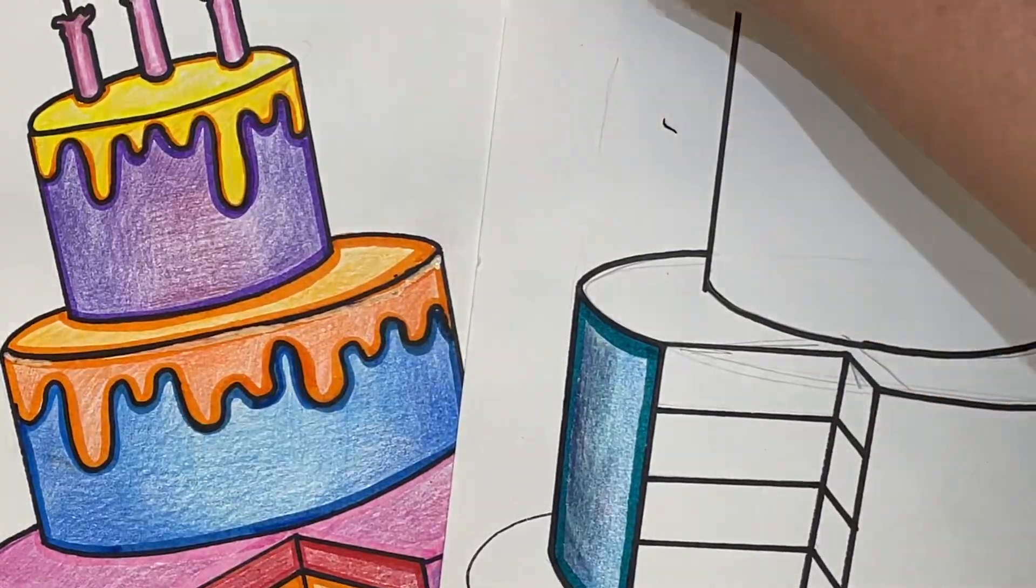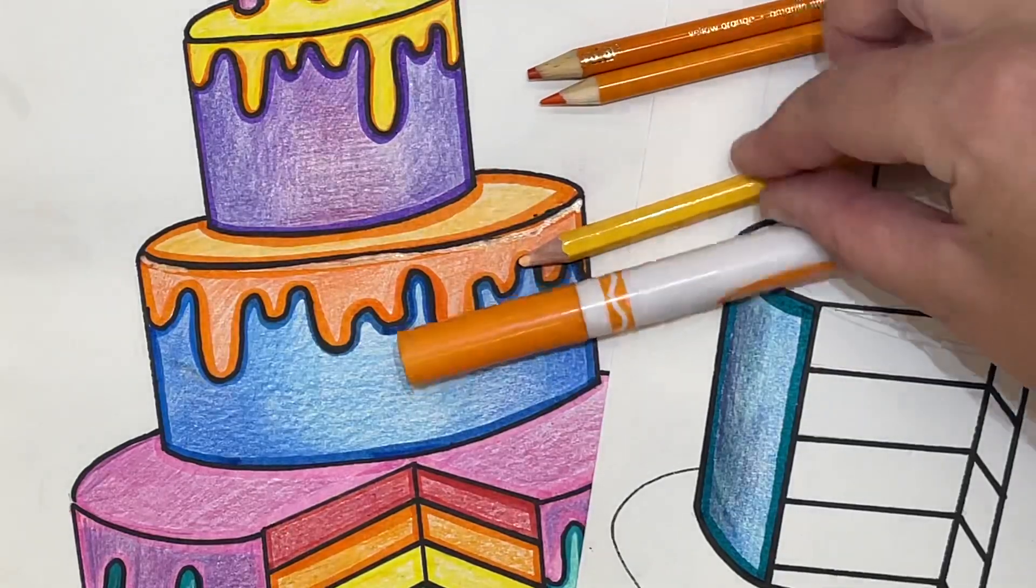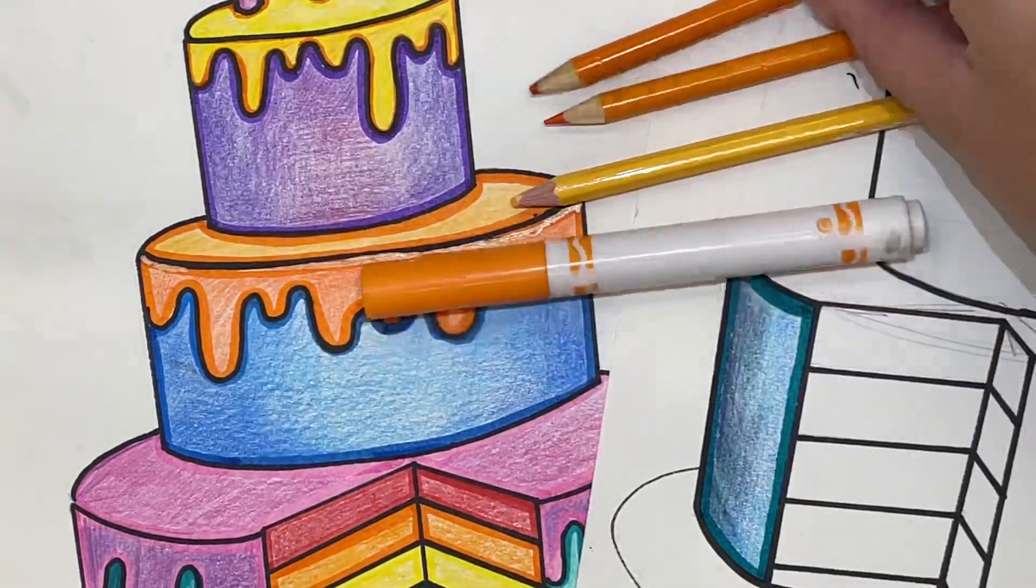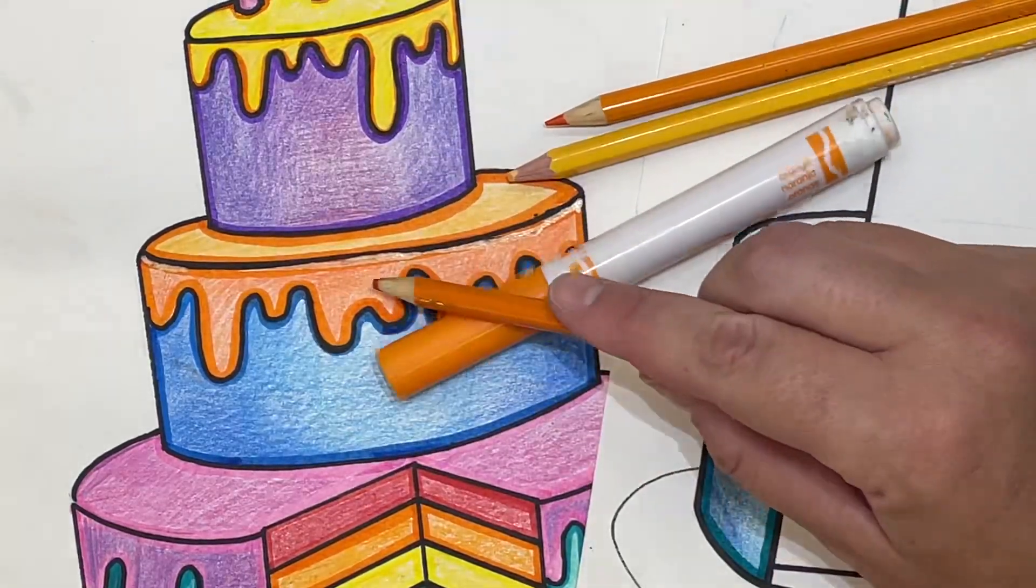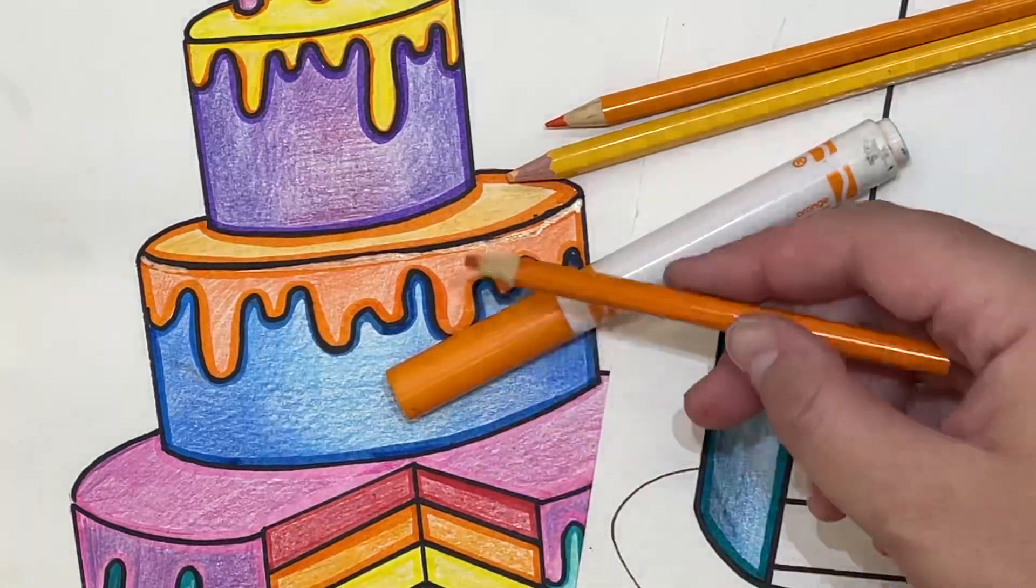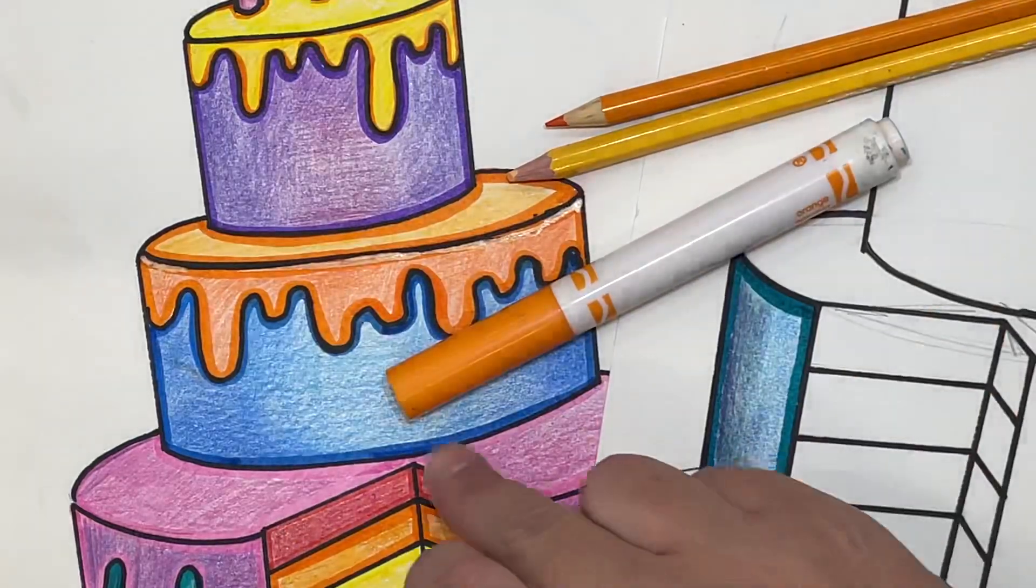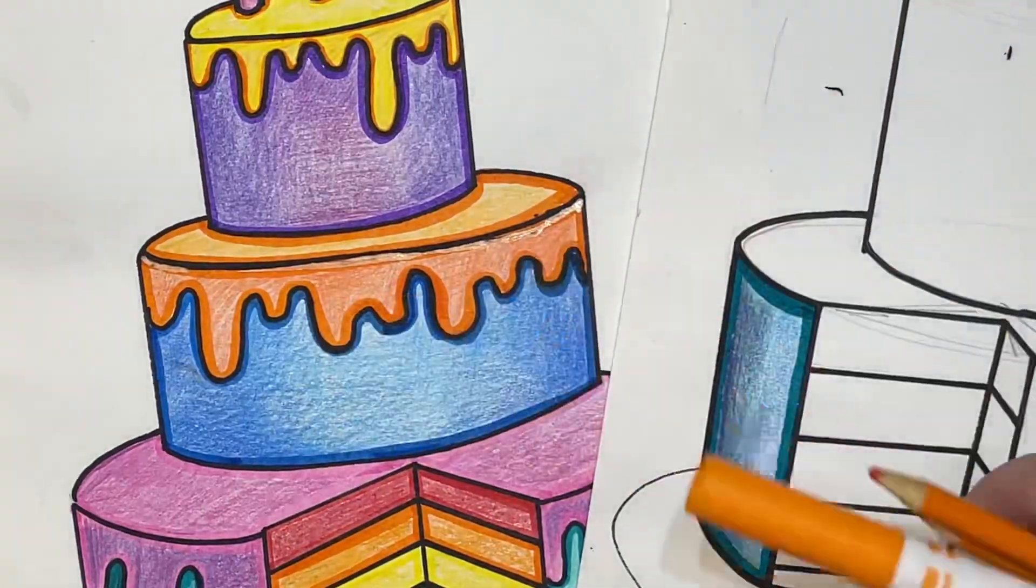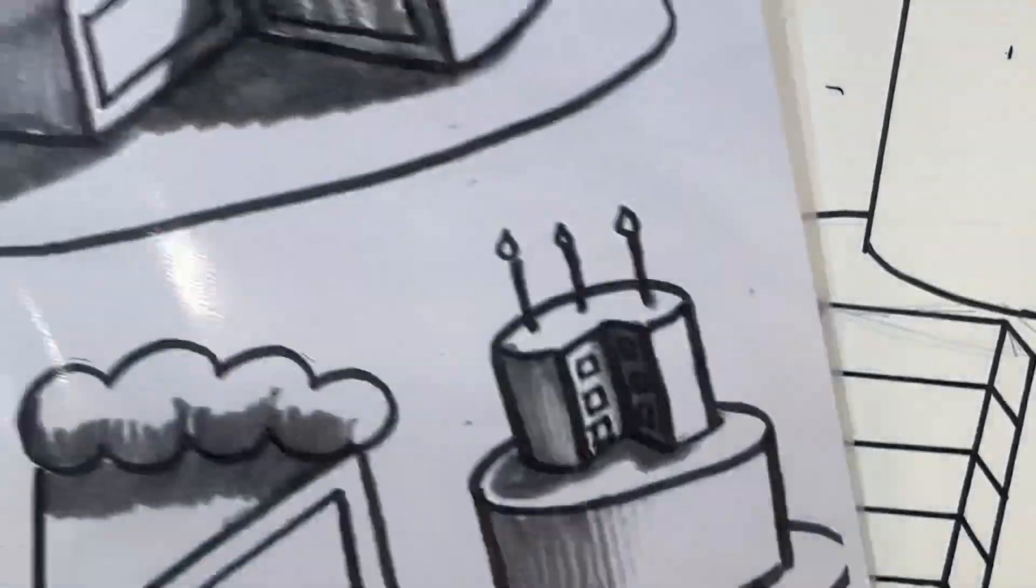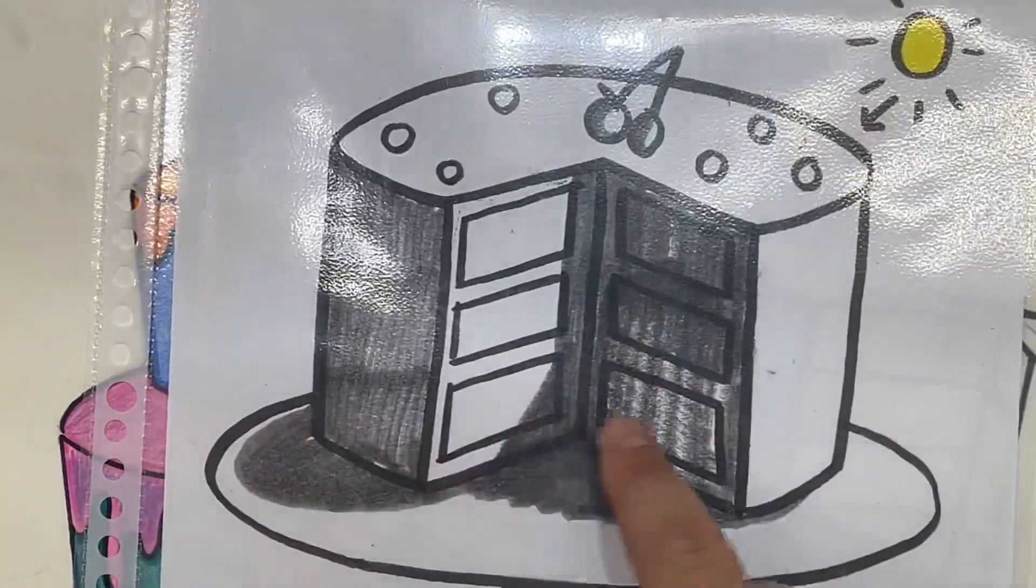Of course you can use any colors you like, but when we're doing something like orange for example you could do a yellow orange on top and a little bit more of a red orange on the side. If you don't have details like frosting you can go ahead and do the same thing with your cake here. Using your knowledge of value and how we can use our colored pencils to shade we can try to create the illusion that there is shadows.